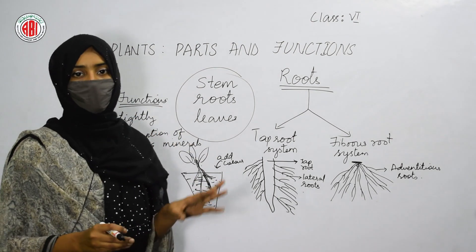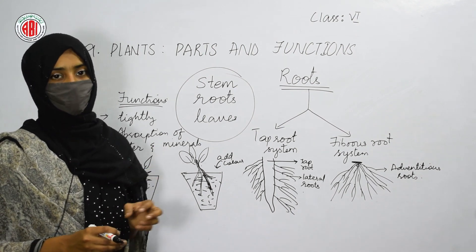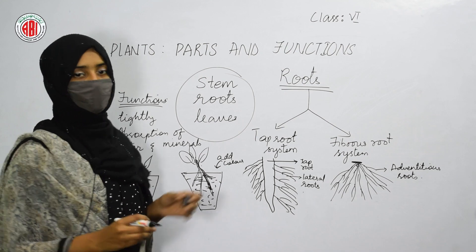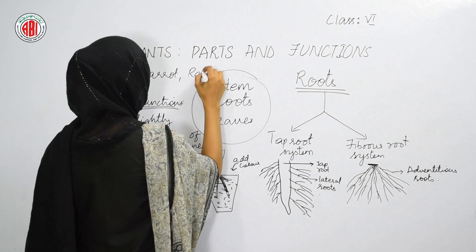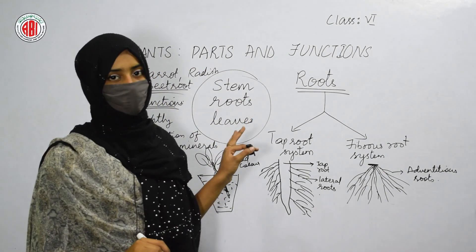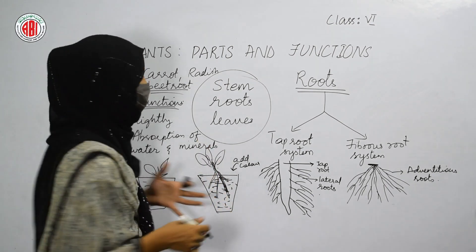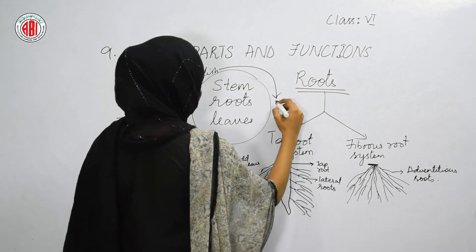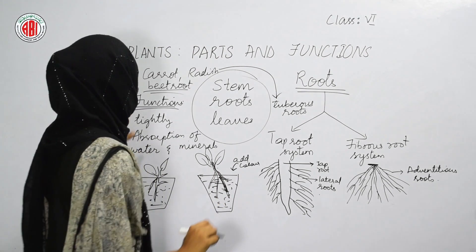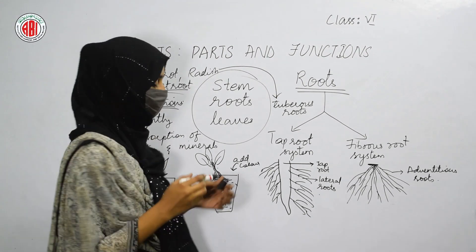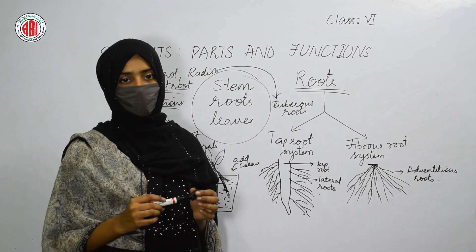Roots are the only parts that help plants absorb water and different minerals present in the soil. Some plants like carrot, radish, and beetroot store food material in their roots. Due to this storage, the roots bulge out and are called tuberous roots. These roots can be used by us as food material. Now let us discuss another important part of the plant: leaves.